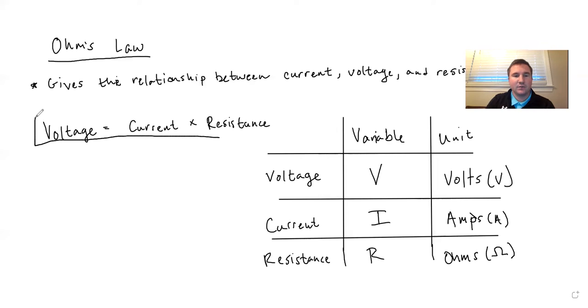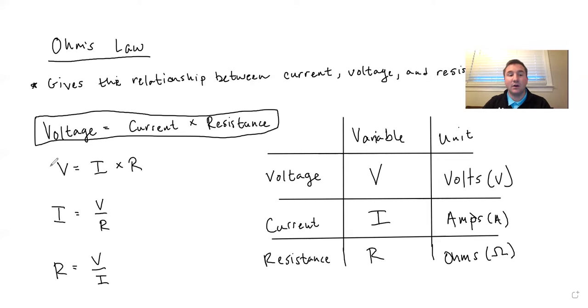Voltage equals current times resistance. Now we can use the variables to represent these and make it a little bit easier to see. So I'd probably put V is equal to I times R. And then we could also rearrange this a couple different ways so that we could get it solved for current. I is equal to V divided by R, or R is equal to V divided by I. So three different ways to write the same equation. It's all Ohm's law.